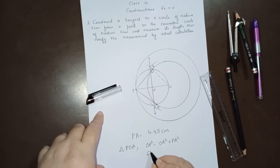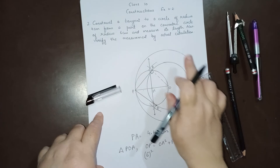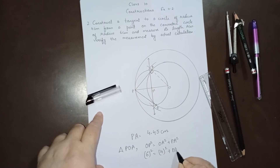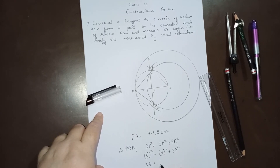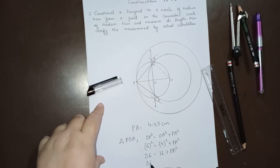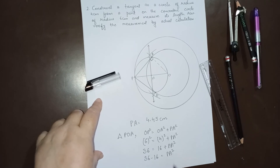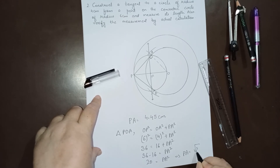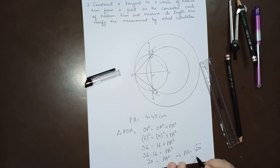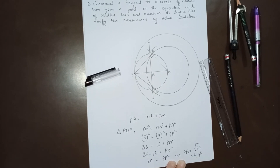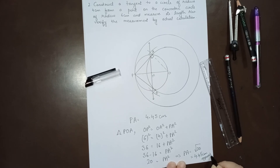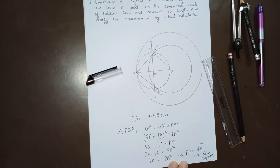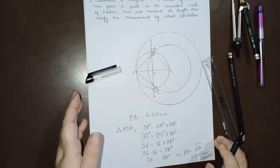OP is 6 centimeters (radius of outer circle) and OA is 4 centimeters (radius of inner circle). So: 6² = 4² + PA², which gives 36 = 16 + PA², so PA² = 20, and PA = √20 ≈ 4.45 centimeters. This verifies that the length of PA is approximately 4.45 centimeters. Thank you very much everyone.